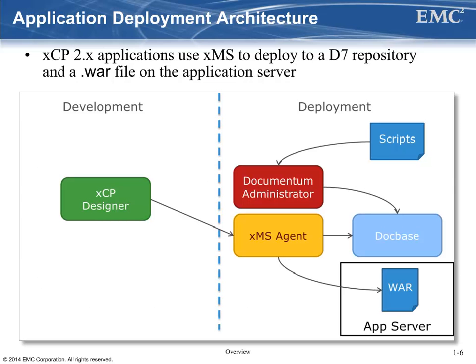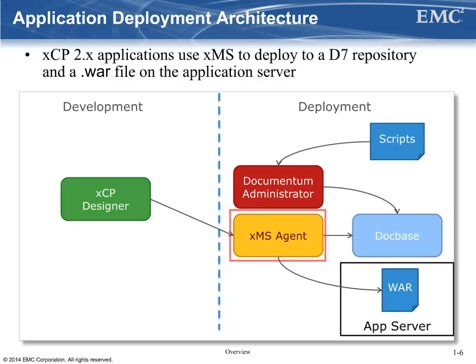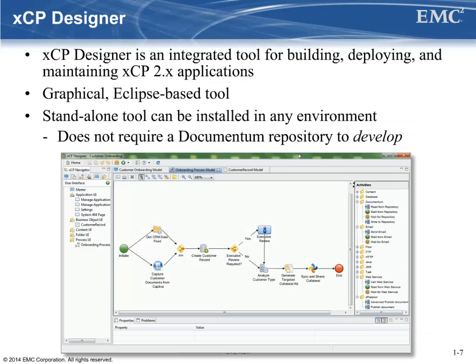This is a diagram that depicts the deployment architecture in XCP 2. The application is developed using the XCP Designer tool. Using the XMS client API, XCP Designer can deploy or update the application to the appropriate runtime environments. Alternatively, there is an XMS command line interface for deploying applications in batch. XCP Designer improves time to value by expediting development, deployment, and maintenance of solutions. Application developers can visually compose rich solutions without the need to code, and partner more closely with business analysts to rapidly iterate and accelerate the design and implementation of solutions.